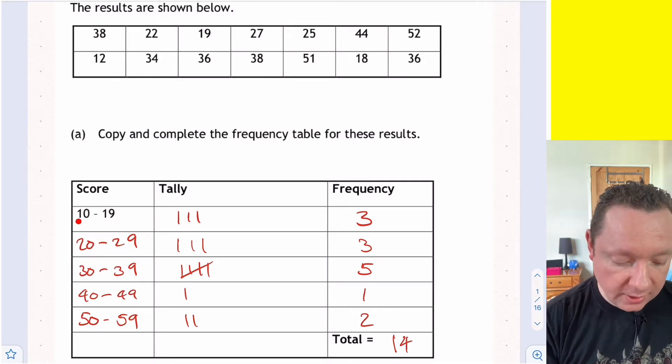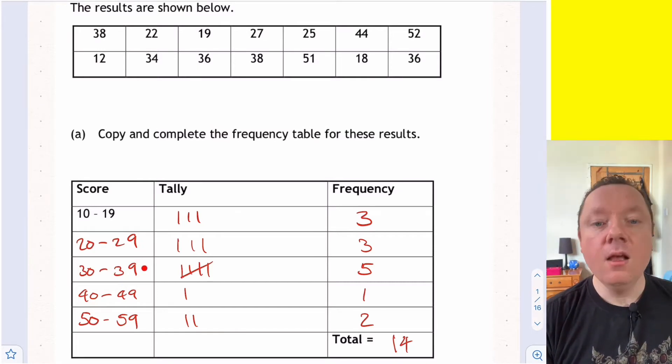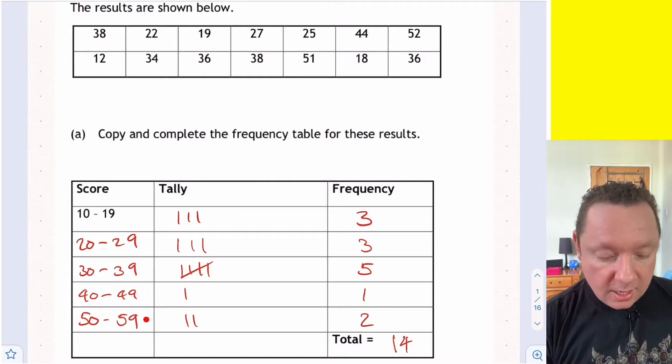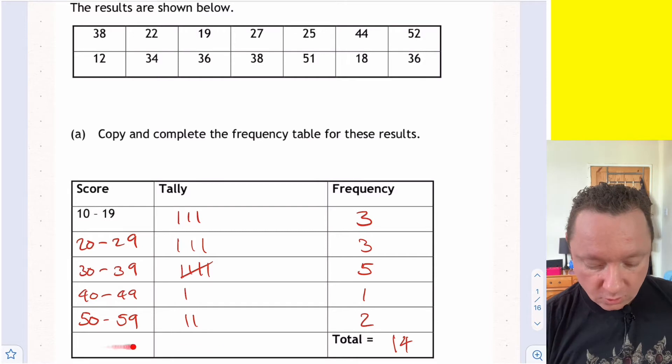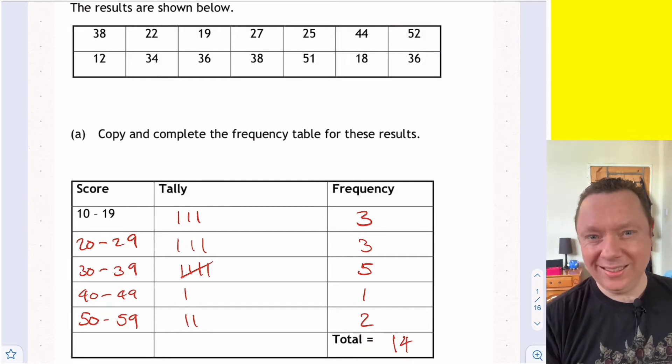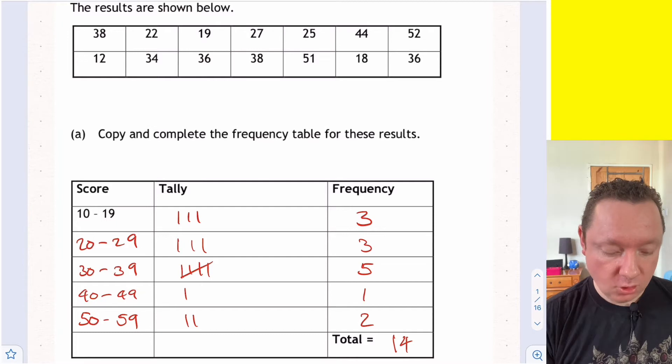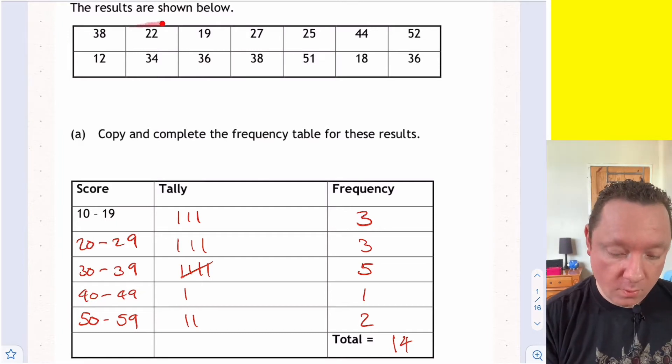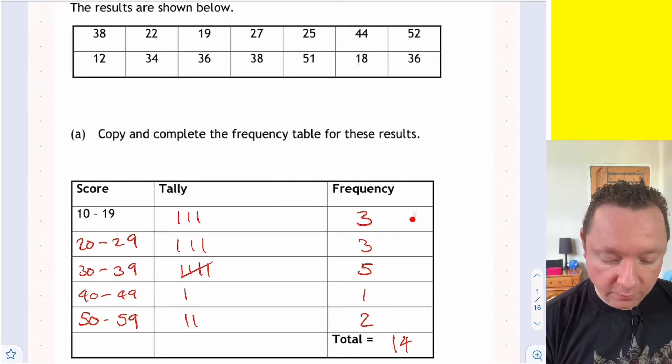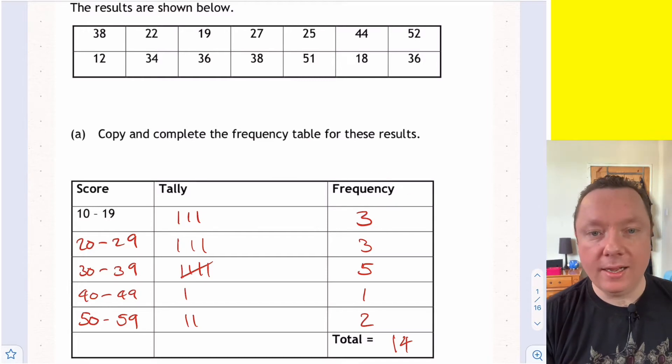So first thing I'm going to do is look at this column here. It starts with 10 to 19, so I'll just continue that: 20 to 29, 30 to 39, 40 to 49, 50 to 59. Then I just do a tally. So all I do is look up in this table, and every time I see a number between 10 and 19, I give a little tally. So I've got 19, there's 1; 12, there's 2; 18, there's 3. The total is 3. The word frequency just means how many did I have.